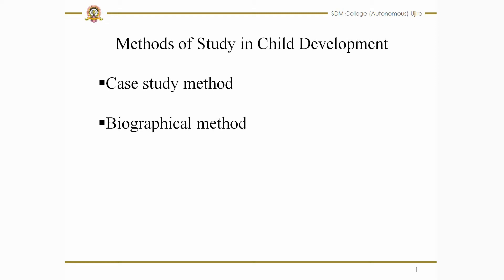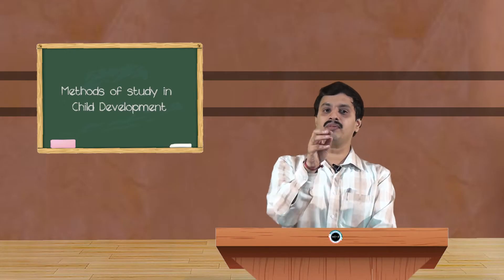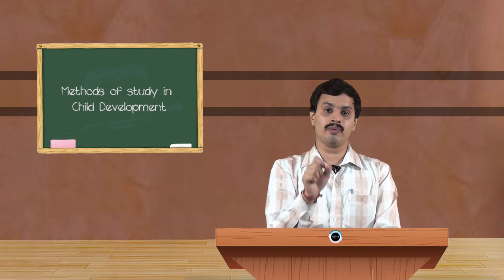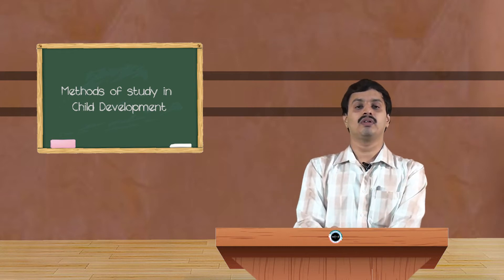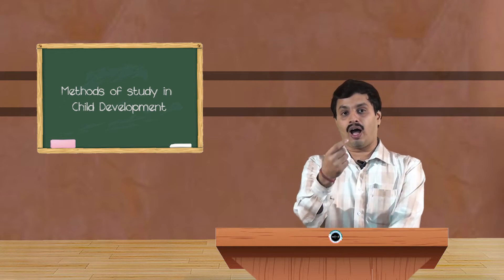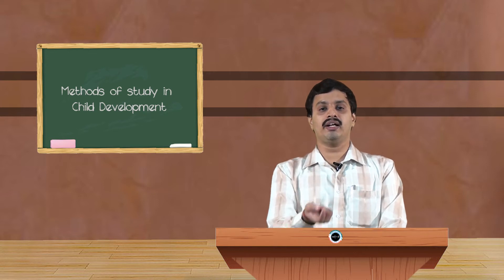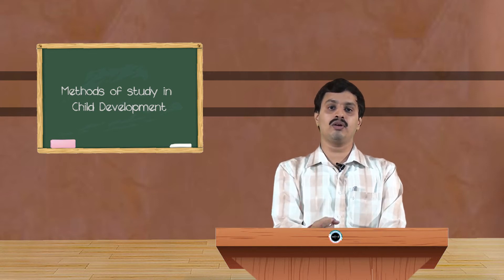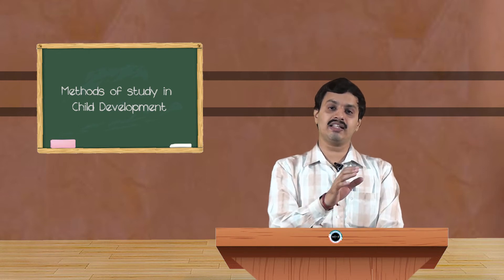Who are collaterals? Collaterals are nothing but they are the parents, teachers, siblings, neighbors, grandparents, etc. From them, information about the problem under study is obtained. They also administer certain psychological tests to the child in order to get additional information and then study the case.